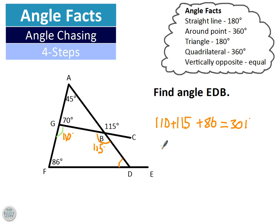So then if I work out 360 take away 301, that gives me 59 degrees. Why did I do that? Because all four angles inside the quadrilateral have to add up to 360. So that makes this one 59.